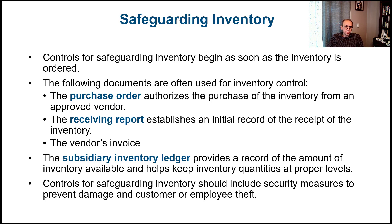Another important document is the inventory invoice, issued by the vendor or supplier, which shows the quantity sent and the price of the items. We also double-check that the vendor's invoice matches our receiving report. The inventory ledger, or subsidiary inventory ledger, provides a record of the amount of inventory available and helps keep inventory quantities at proper levels.